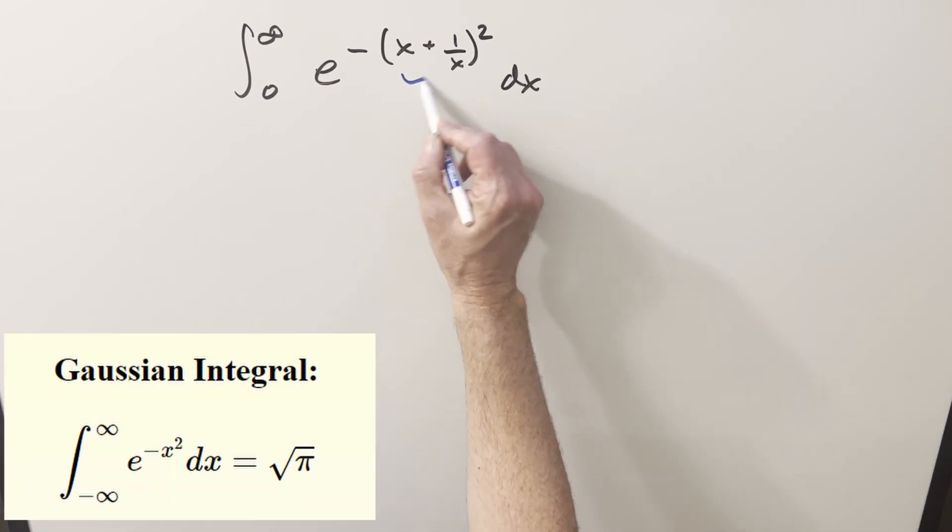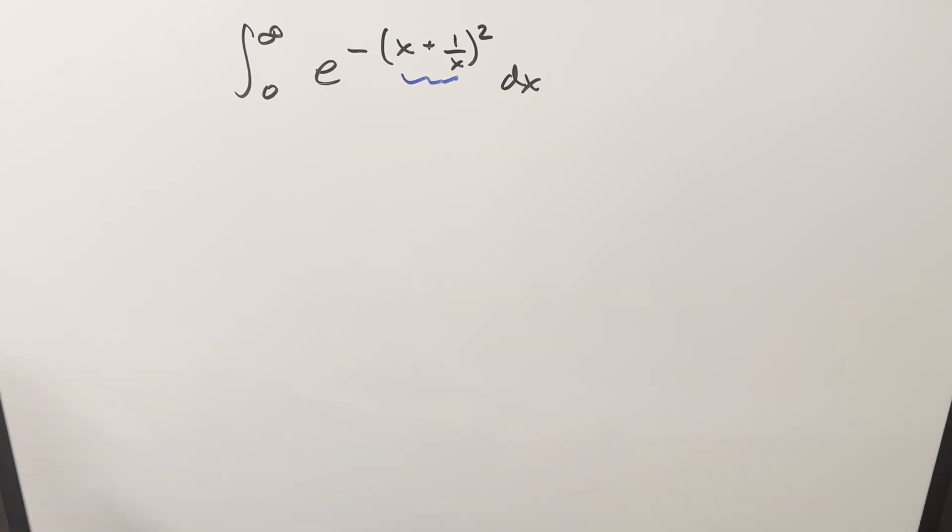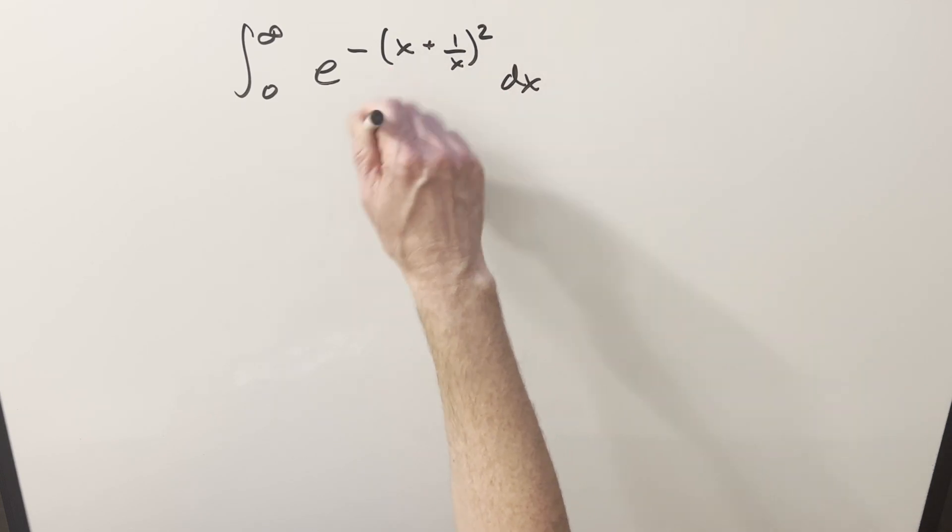If you just had something else here, if we just had one variable here, it would be exactly in the form of the Gaussian integral. The solution for that would be square root of pi over 2. So my first thought was actually let's do a u substitution on this to clean it up, and then we're basically right at the solution. The trouble is when you take the derivative of that, you get like 1 minus 1 over x squared. You might be able to get it to work, but I kind of gave up on that really quick just because it looked messy.